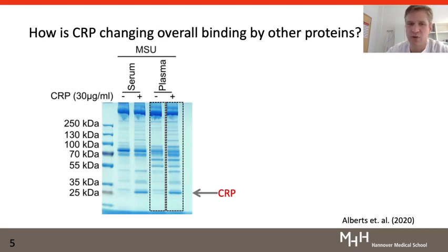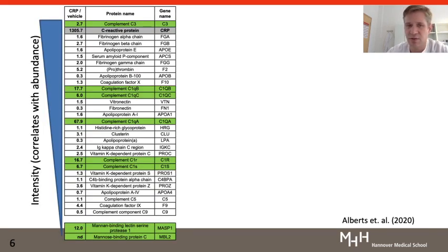One of them is of course CRP itself. To identify all the other proteins that seem to have been recruited by CRP, we subjected both of these lanes to mass spectrometry. And here you can see the list of the most abundant proteins on these crystals. In the left column you see the increase in each protein in the presence of CRP. The proteins that are increased are colored in green.